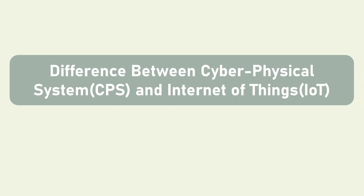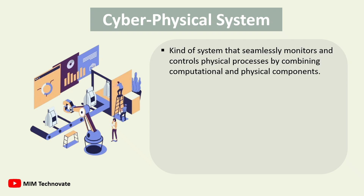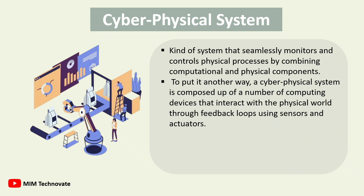Difference between cyber-physical system and Internet of Things. A cyber-physical system is a kind of system that seamlessly monitors and controls physical processes by combining computational and physical components. A cyber-physical system is composed of a number of computing devices that interact with the physical world through feedback loops using sensors and actuators.